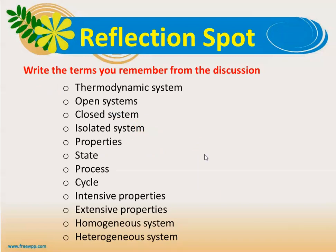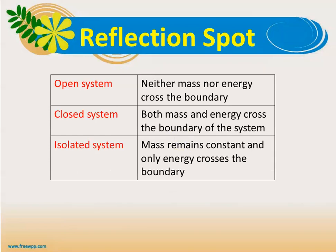When you are able to recall and write: thermodynamic system, open system, closed system, isolated system, properties, state, process, cycle, intensive properties, extensive properties, homogeneous system, and heterogeneous system — then it is good. To summarize: in an open system, both mass and energy cross the boundary; in a closed system, mass remains constant and only energy crosses the boundary; in an isolated system, neither mass nor energy crosses the boundary.